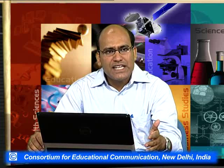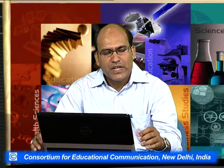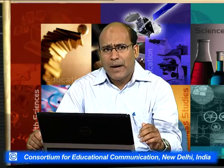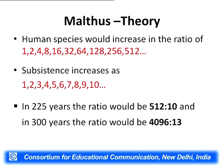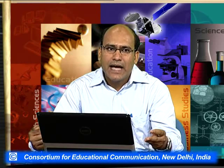Malthus gave his mathematical model to prove his point. He said that population, when unchecked, increases in a geometric or exponential ratio, while subsistence increases only in an arithmetic ratio. Malthus said that human species would increase in the ratio of 1, 2, 4, 8, 16, 32 - and will keep multiplying. This is what he called geometric growth. Whereas subsistence increases only additively: 1, 2, 3, 4, 5, 6, 7, 8. The first increases at multiplying rates, whereas the second increases at additive rates.